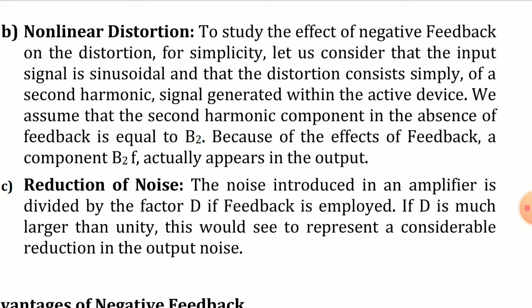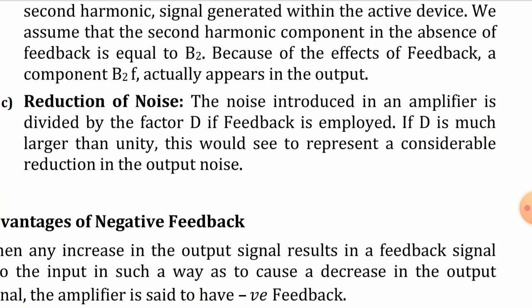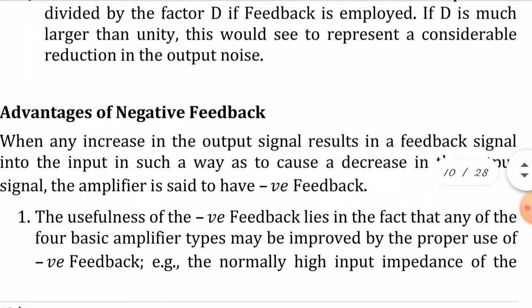Next is noise reduction. The noise introduced in an amplifier is divided by the factor D if feedback is employed. Suppose the gain is 100 and noise is 1; if noise is also divided by D, that becomes 1/20 = 0.05. If D is much larger than unity, this represents a considerable reduction in the output noise. This is one of the advantages — how reduction of noise is achieved by using feedback.